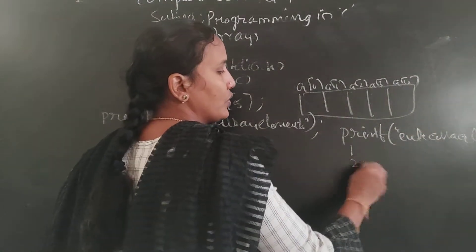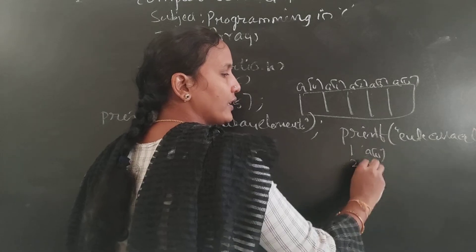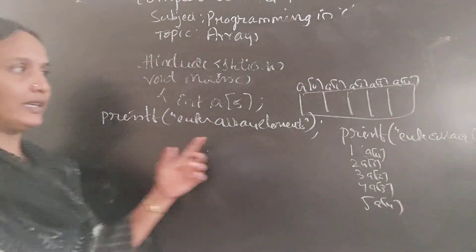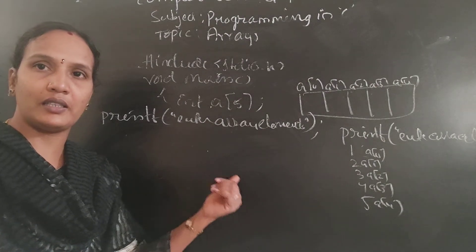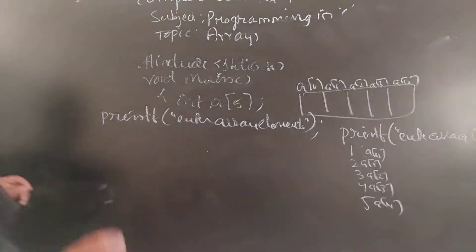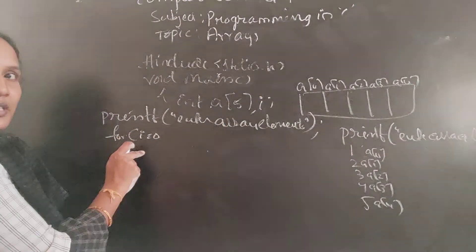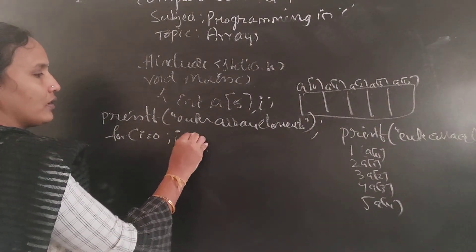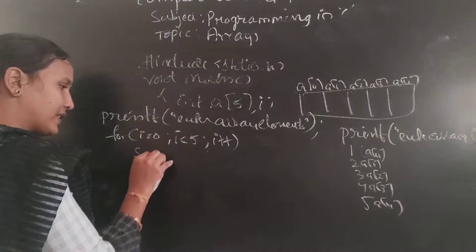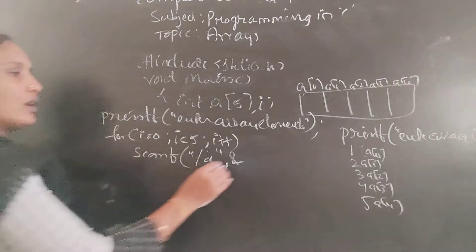After this message, the user will give values like 1, 2, 3, 4, 5. So value 1 should be stored in A of 0, value 2 in A of 1, value 3 in A of 2, value 4 in A of 3, value 5 in A of 4. Since the index number should increment, we use a for loop: for i equals to 0, i less than 5, i++, then scanf percent d ampersand A of i.